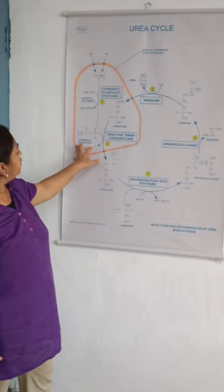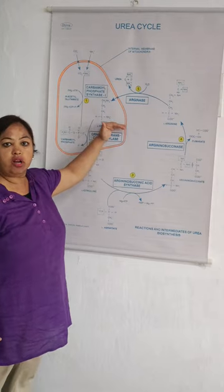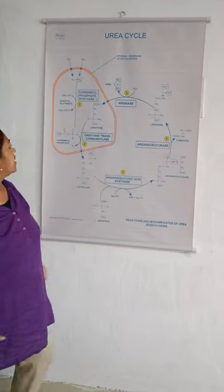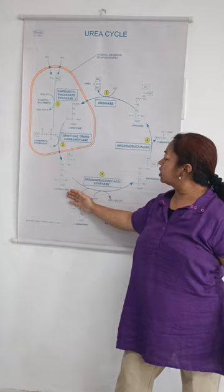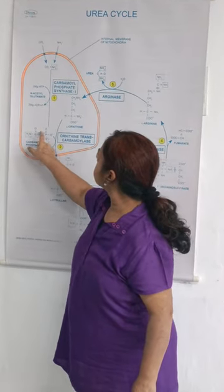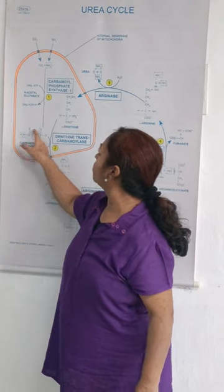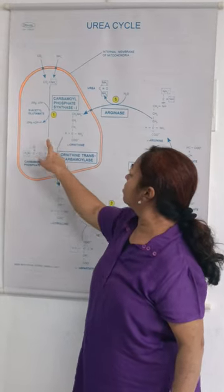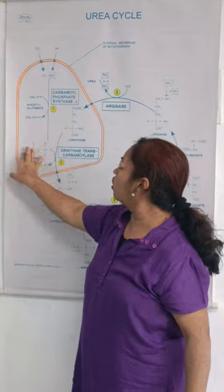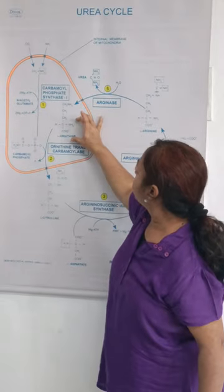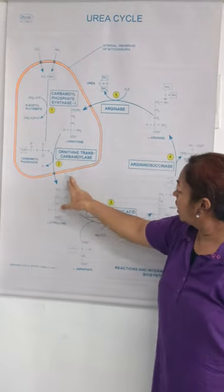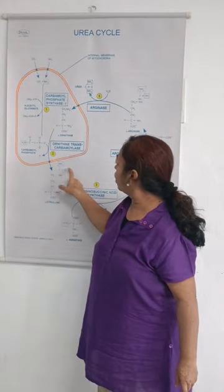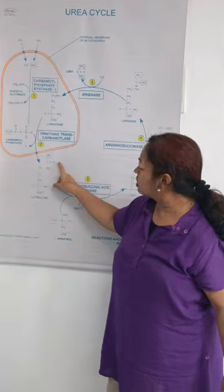Carbamoyl phosphate reacts with L-ornithine in the presence of the enzyme ornithine trans-carbamoylase. The carbamoyl moiety comes from carbon dioxide and ammonia, and the phosphate group comes from ATP. Both combine with ornithine, and with the elimination of water, the carbamoyl moiety is attached to form citrulline.